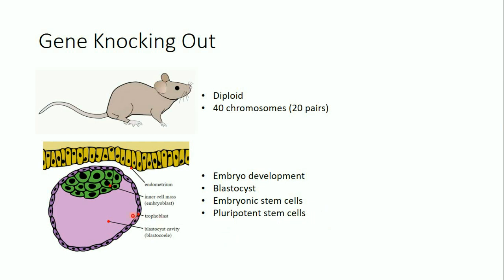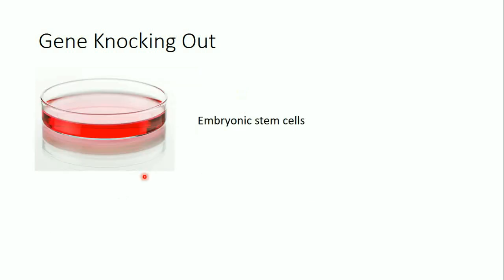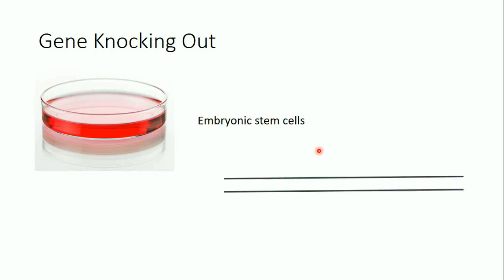We can de-differentiate these pluripotent stem cells into neurons, hepatocytes, or any other type of cell in the body. What we can do is take one embryonic stem cell and culture it in a petri dish to get many embryonic stem cells.